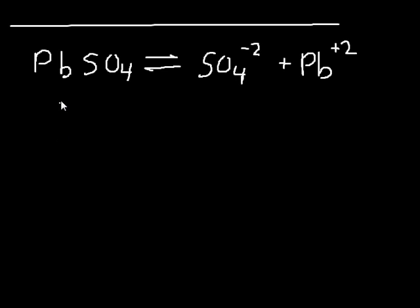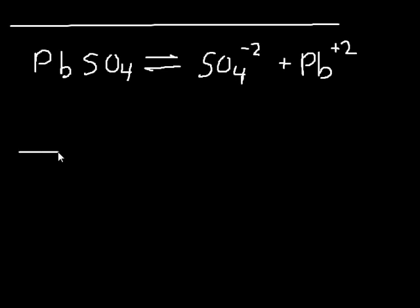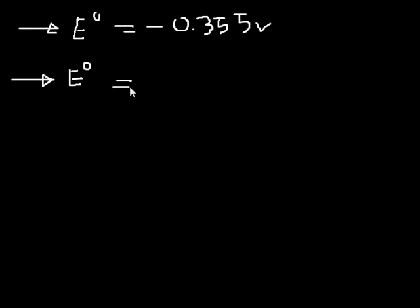For the top reaction, the reaction where the sulfate comes off the lead, we have E naught equal to negative 0.355 volts. And for the bottom reaction, just the reduction potential of lead two plus to lead zero, we have E naught equal to negative 0.126 volts.